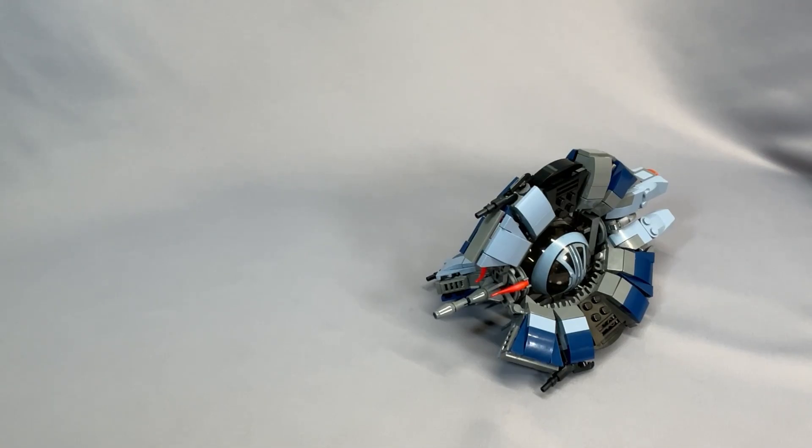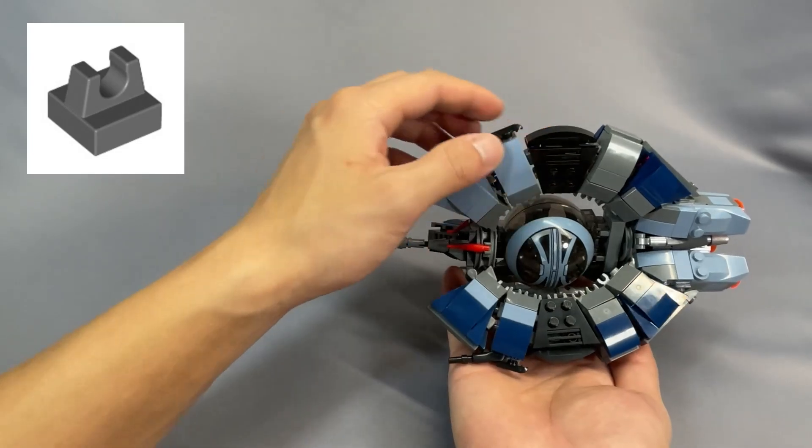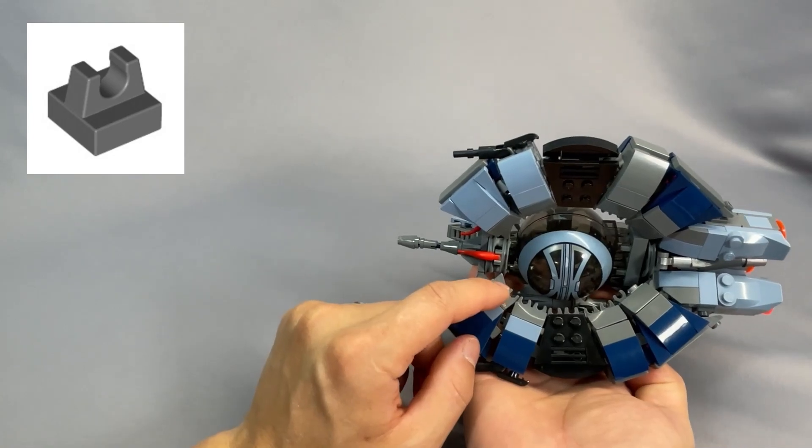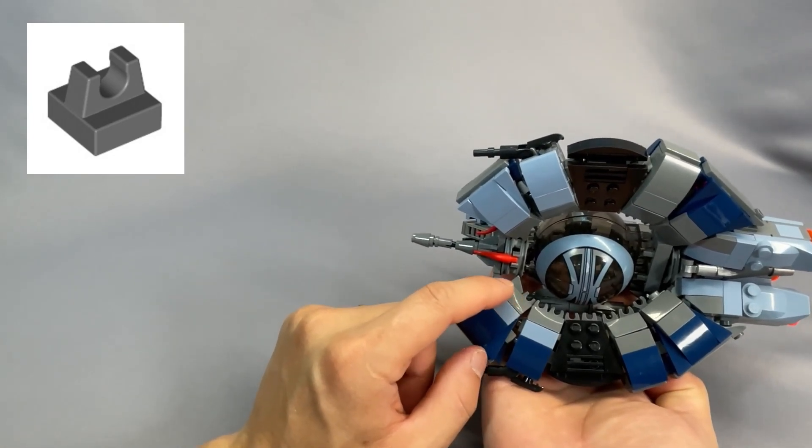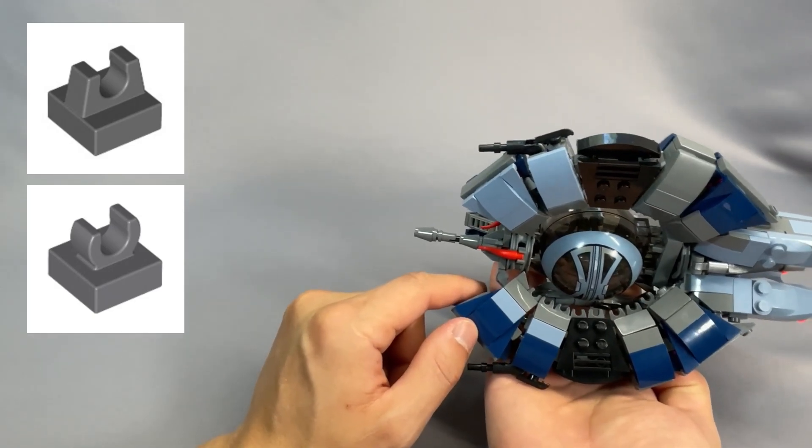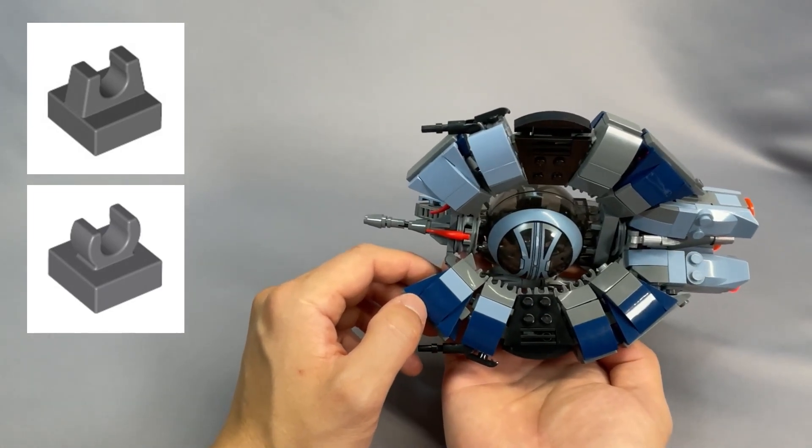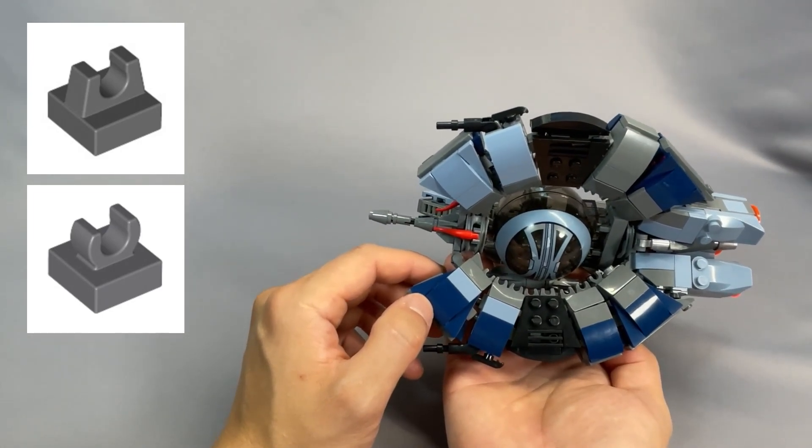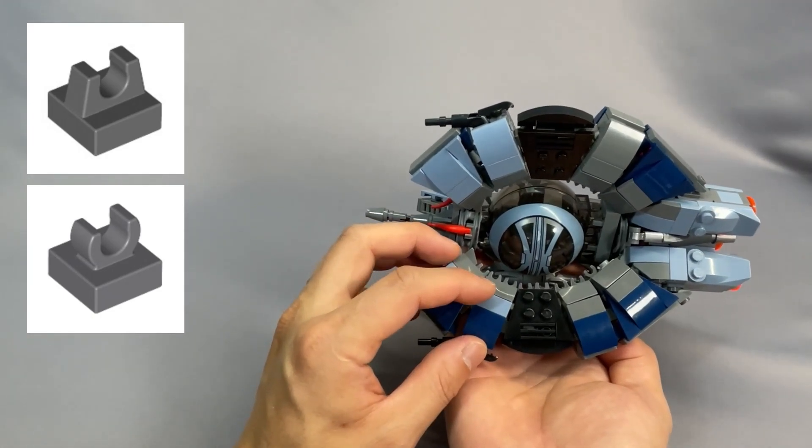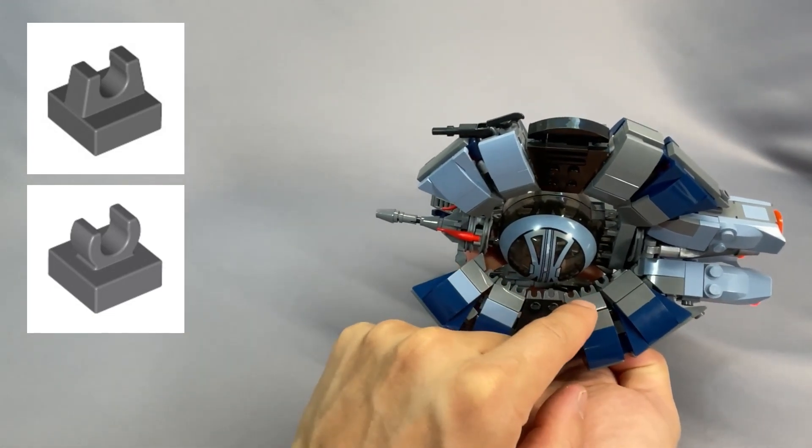The designer has specified the older type of modified tile with clip, part 2555 in dark bluish gray. There are 26 of them, and they're mostly inside the curved sections here. And I chatted with Grimder a bit and he consciously chose the 2555s over the newer 15712 modified tiles to more accurately represent the details we see on the Fighter in the movies and Clone Wars show. I definitely agree that the older clips look better. However, these will likely be more expensive than the newer clips, and you can see like here is a newer one, and compared to the rest of them are the older model.